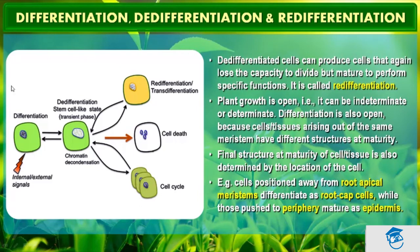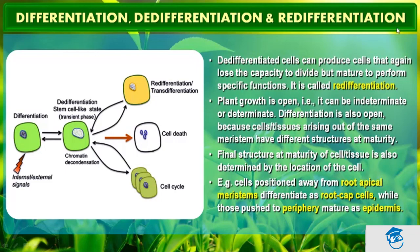To summarize: in differentiation, cells derived from root apical and shoot apical meristem and cambium differentiate and mature to perform specific functions — this act of maturation is differentiation. De-differentiation is the phenomenon in which living differentiated cells that have lost the capacity to divide can regain the capacity for division under certain conditions. Re-differentiation refers to de-differentiated cells producing cells that again lose the capacity to divide but mature to perform a specific function.